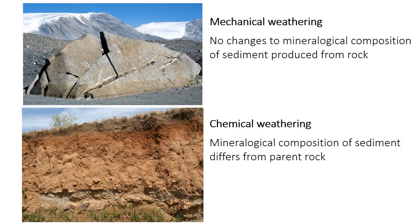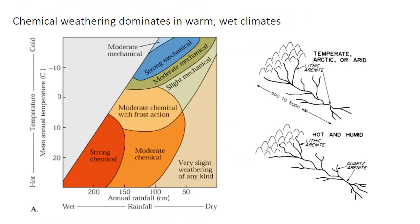Weathering can also occur due to chemical processes — the breakdown of minerals due primarily to acidic water — and this does alter the mineralogical composition. The relative importance of mechanical and chemical weathering differs largely as a function of temperature and rainfall, with chemical weathering dominating in warm and wet regions. Mechanical weathering dominates in cold and temperate regions as well. In very dry regions, very little weathering occurs.